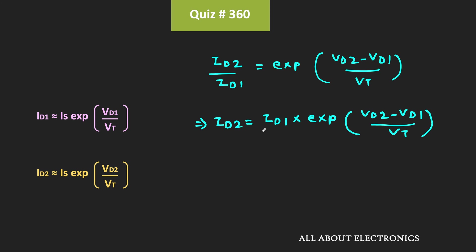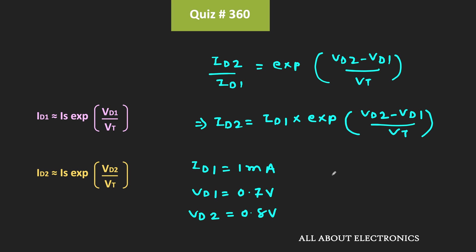We already know the values: Id1 = 1mA, Vd1 = 0.7V, and the required Vd2 = 0.8V. At room temperature, the thermal voltage Vt is around 25mV. Some of you might have taken Vt as 26mV, and with that value the result will be slightly different. Here, I am considering Vt as 25mV, so let us find the value of Id2.